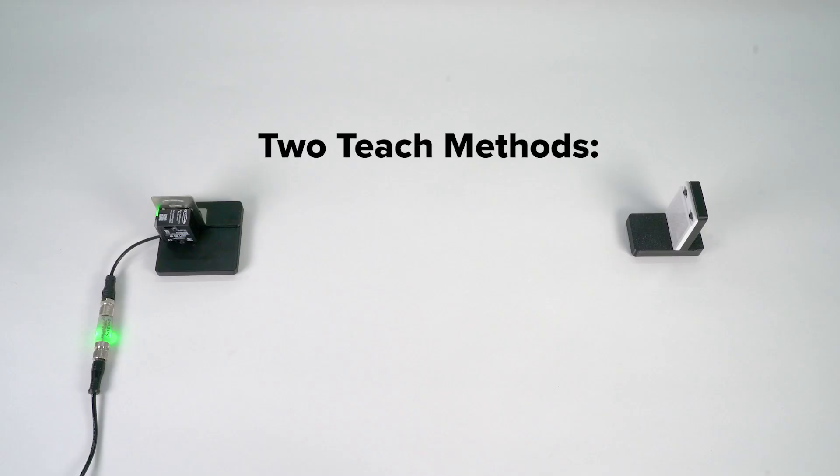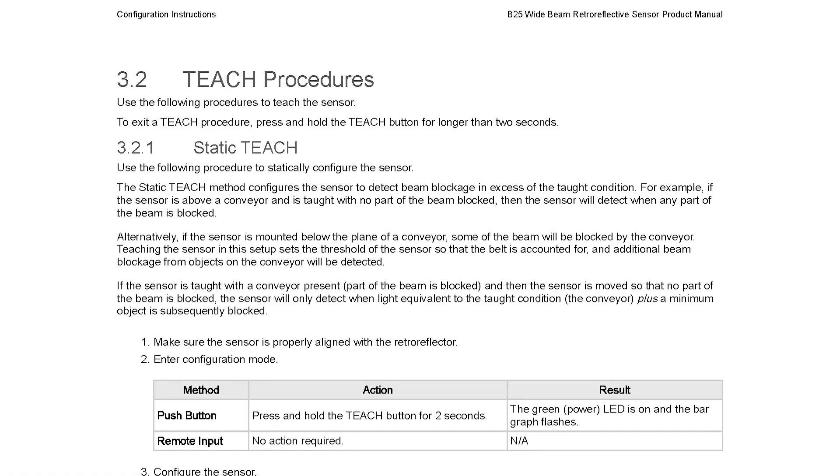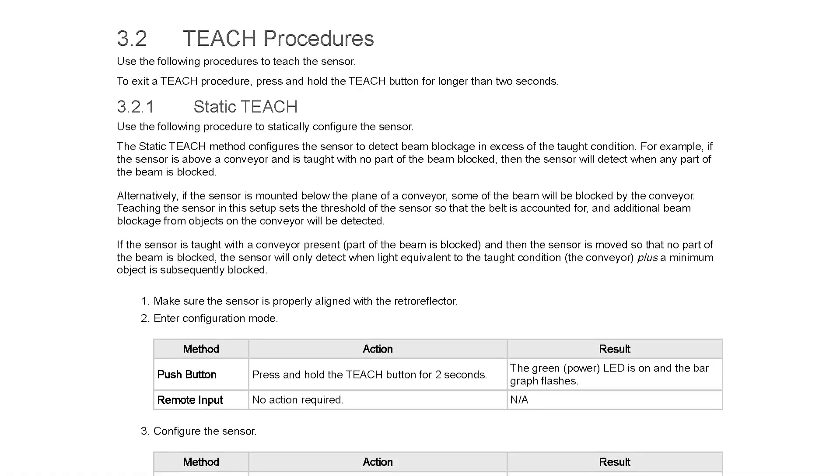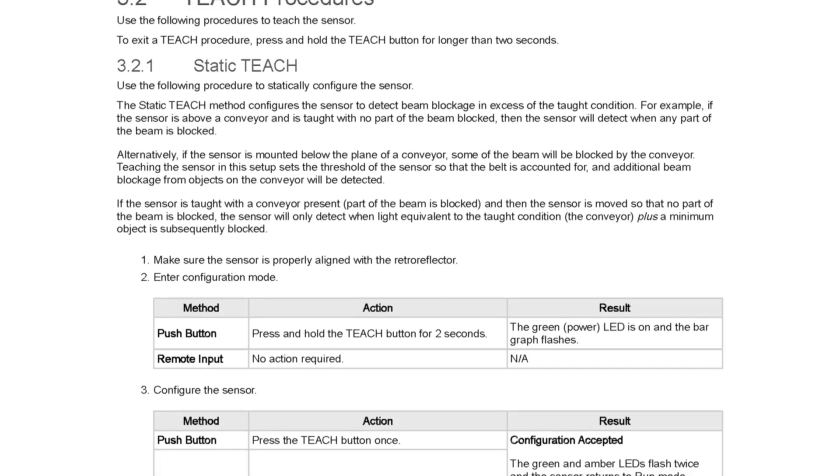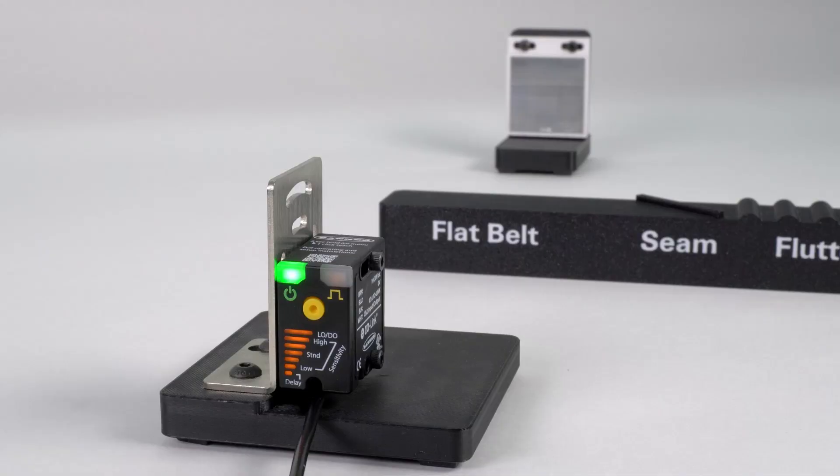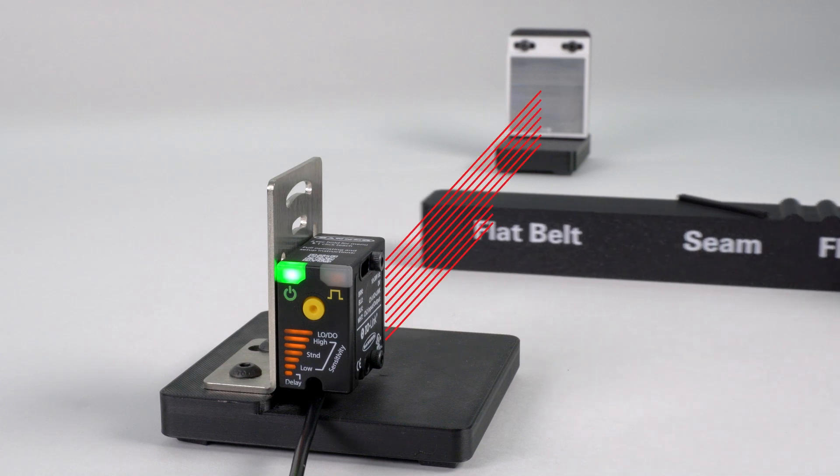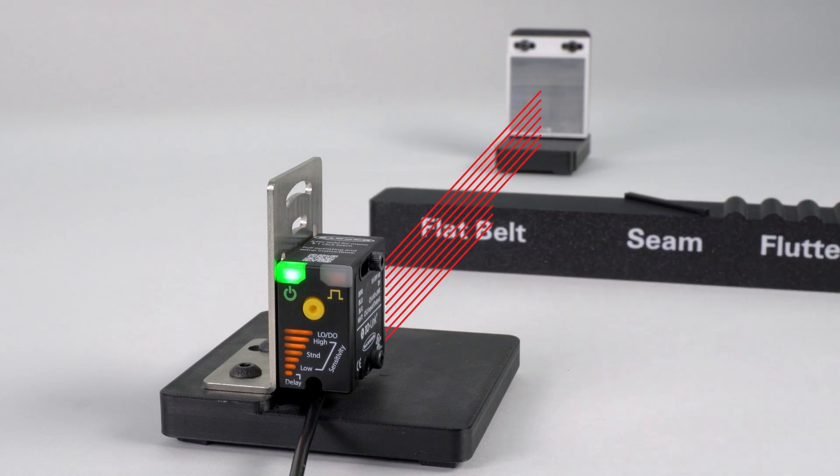There are two methods of teaching the sensor: a static teach and a dynamic teach. The static teach method configures the sensor for detecting beam blockages in excess of a taut condition. This means the sensor can be taught with some beam obstruction from a conveyor and only detect objects that rest on top of the conveyor itself.